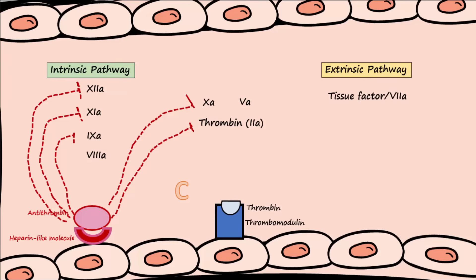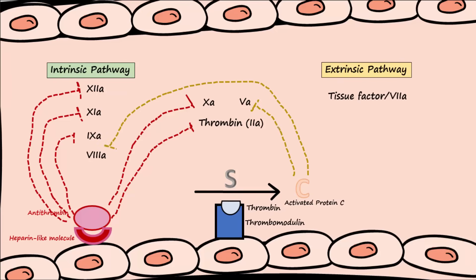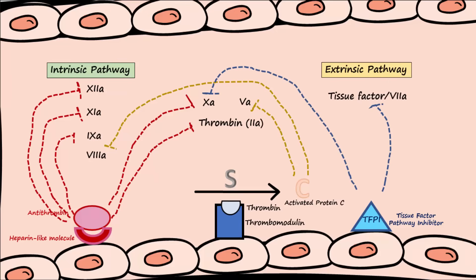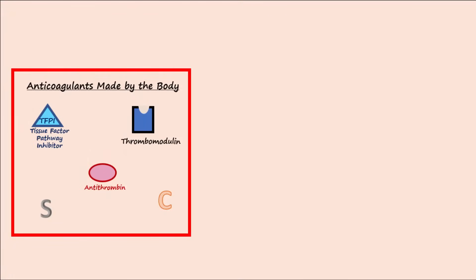Protein C is activated by thrombomodulin, expressed by endothelial cells, which forms a complex with thrombin. The activation of protein C is enhanced by protein S. Activated protein C inactivates factor 8a and factor 5a. Tissue factor pathway inhibitor, or TFPI, is made by endothelial cells and inactivates tissue factor–factor 7a complexes as well as factor 10a.